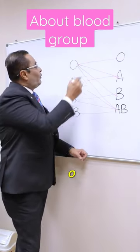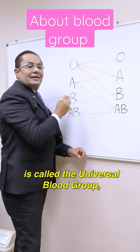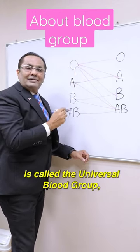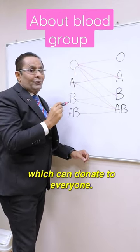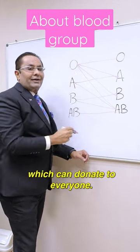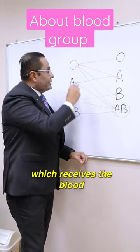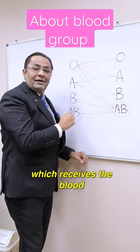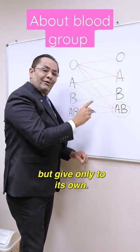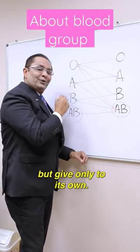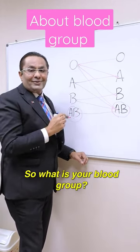So that's why O is called the universal blood group, which can donate to everyone. Whereas AB is a universal receiver, which receives blood from all the groups but gives only to its own. So what is your blood group?